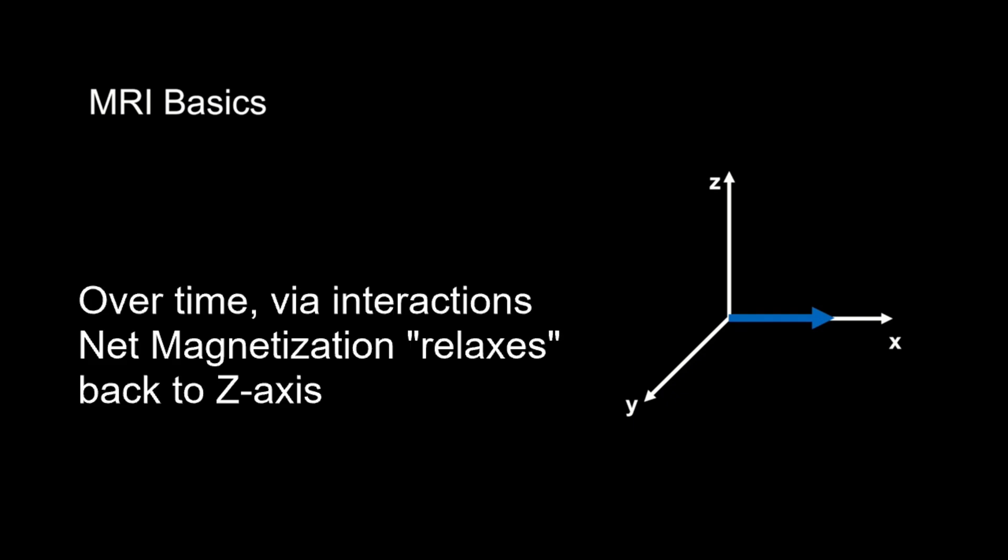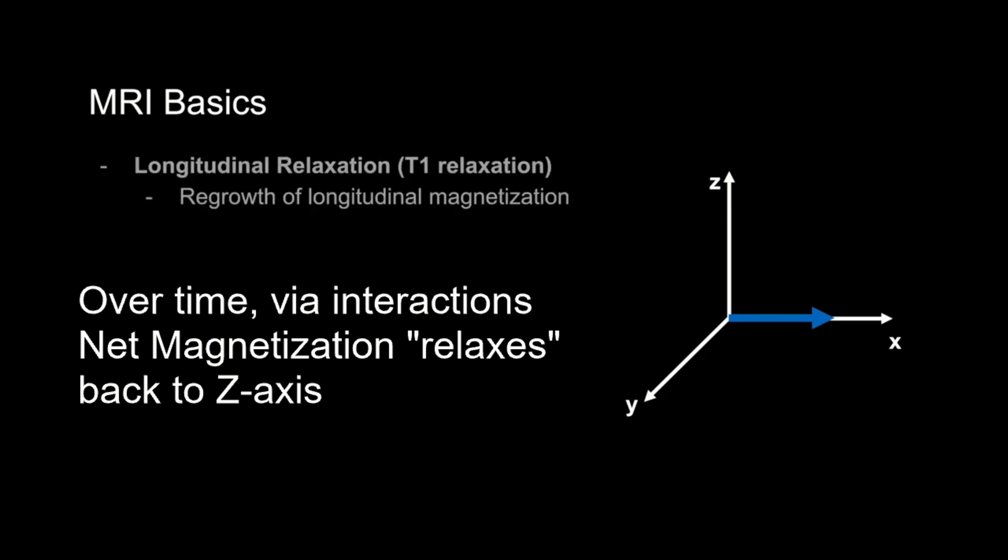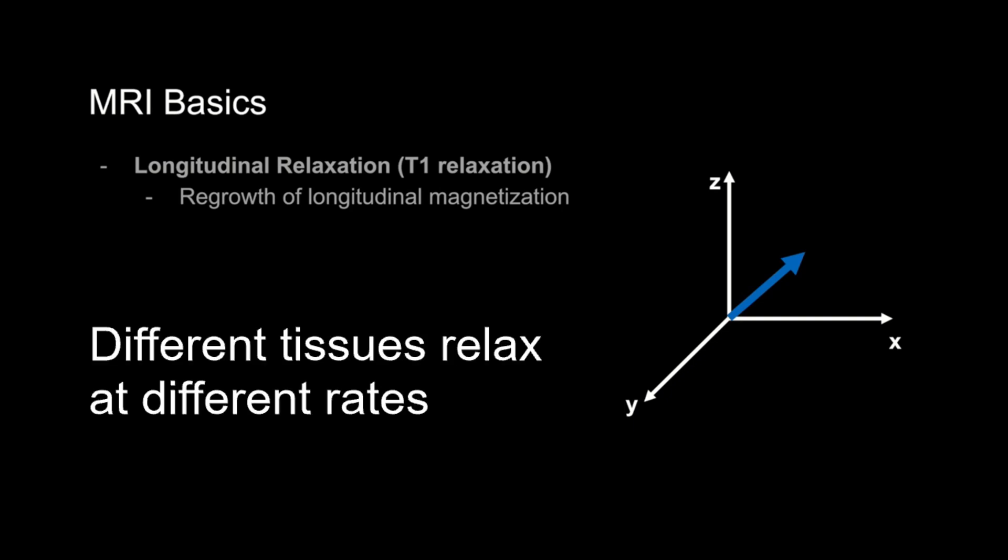Over time, through interactions with the surrounding environment, the net magnetization vector will relax back to the Z axis. Remember, the Z axis is the longitudinal axis, so this process is called longitudinal relaxation, also known as T1 relaxation. At any given point between the XY plane and the Z axis, there's going to be a net magnetization vector with a Z axis component or longitudinal component and a transverse component in the XY plane. What matters here is that depending on the tissue environment, the net magnetization will relax back into the Z axis at different rates. So at any given time, different tissues will have different amounts of detectable signal and can be differentiated based on this.